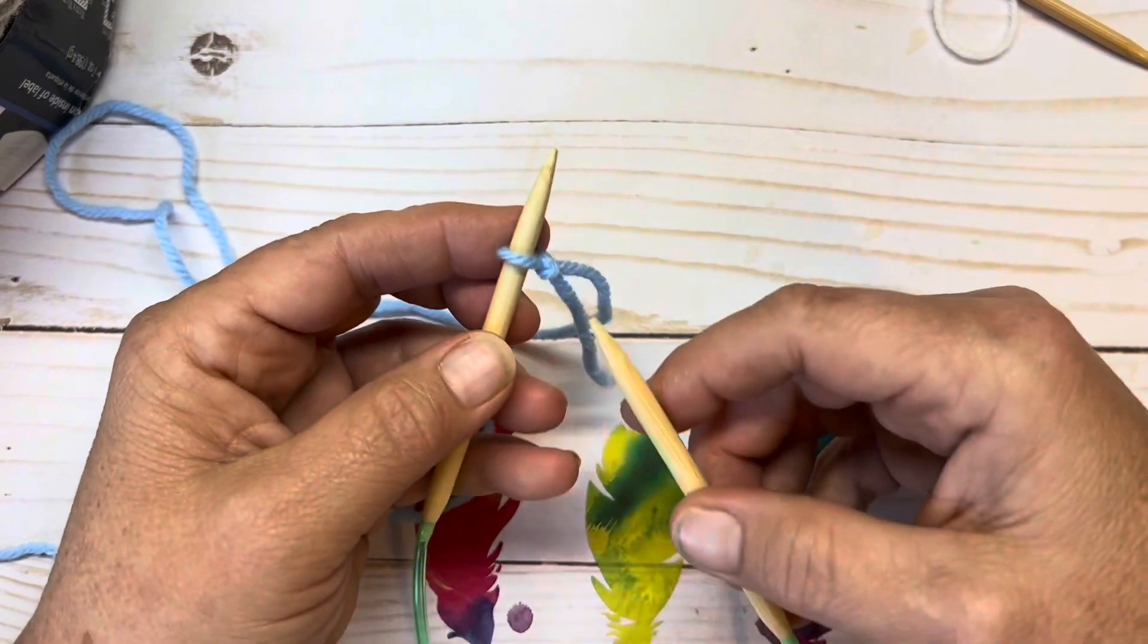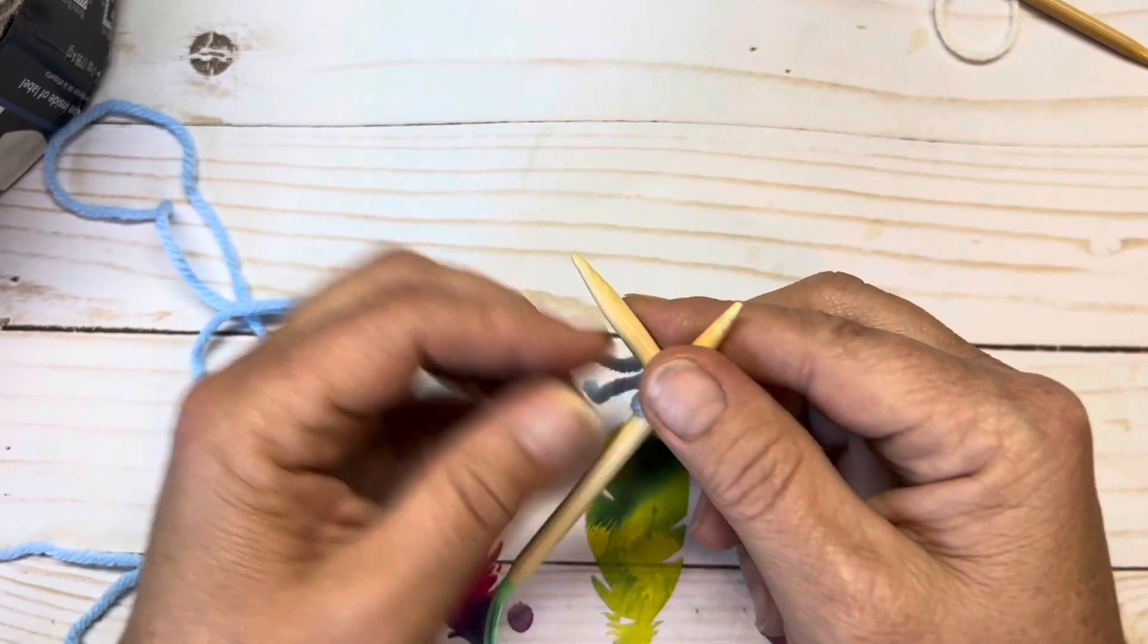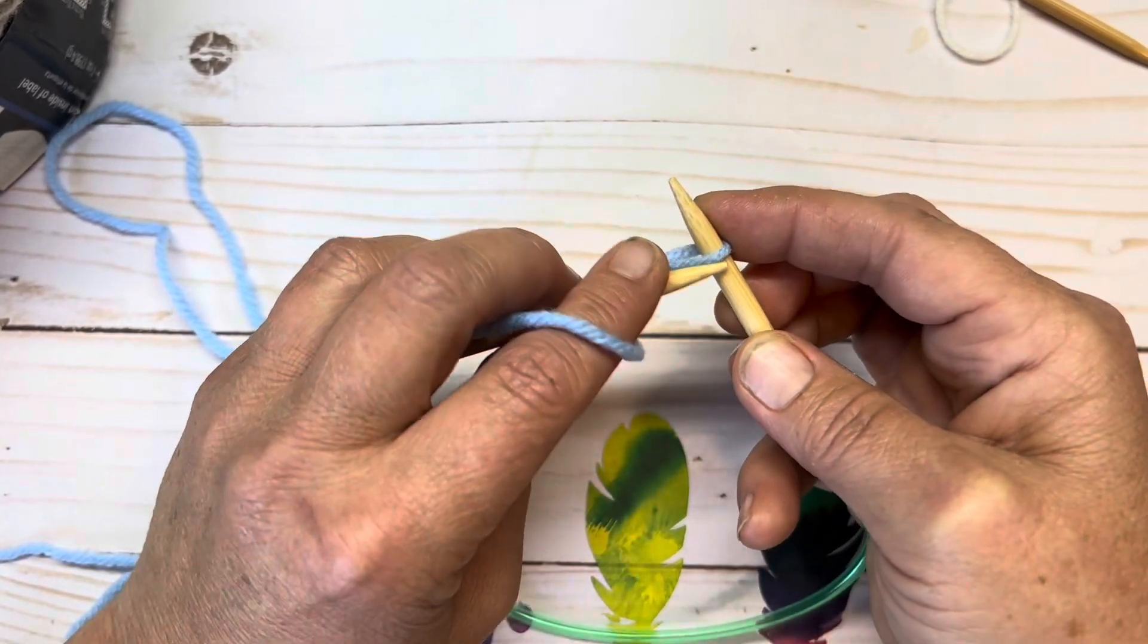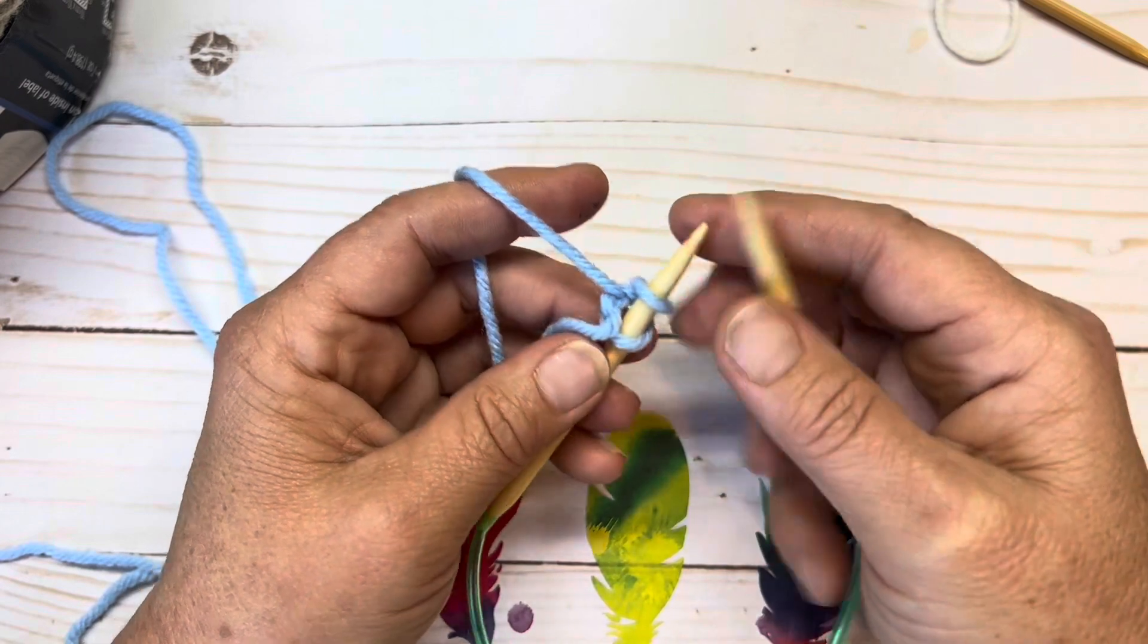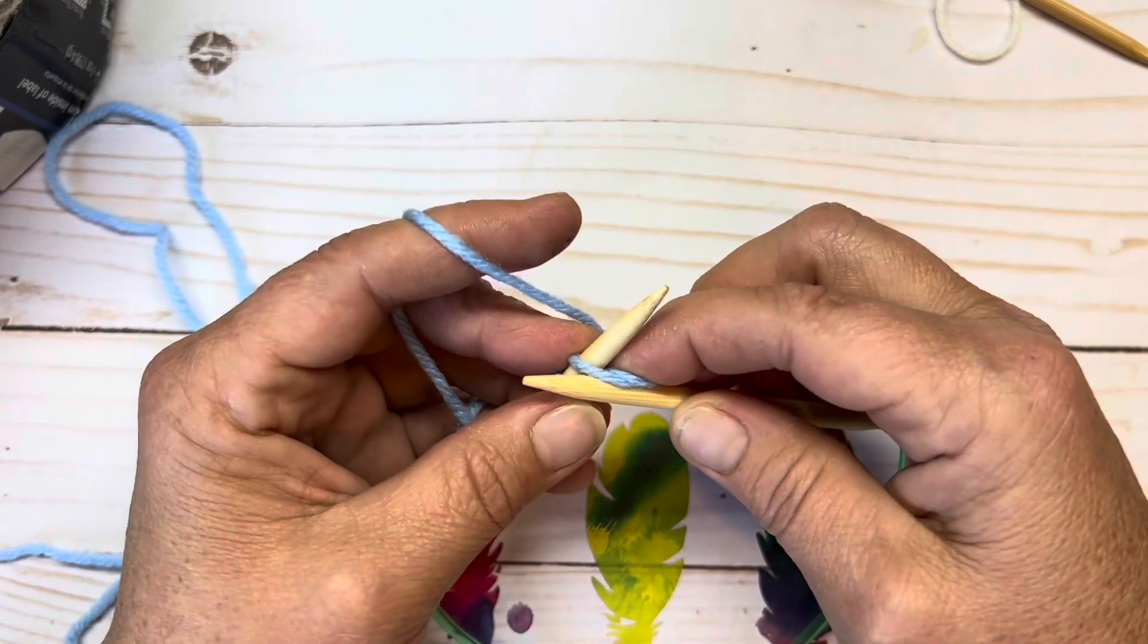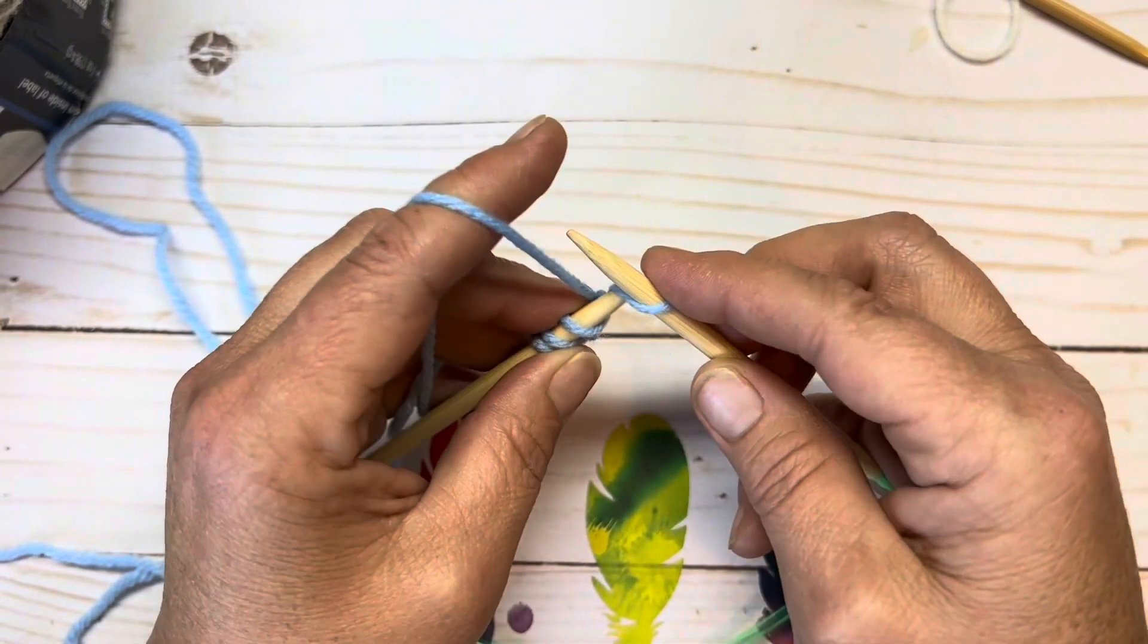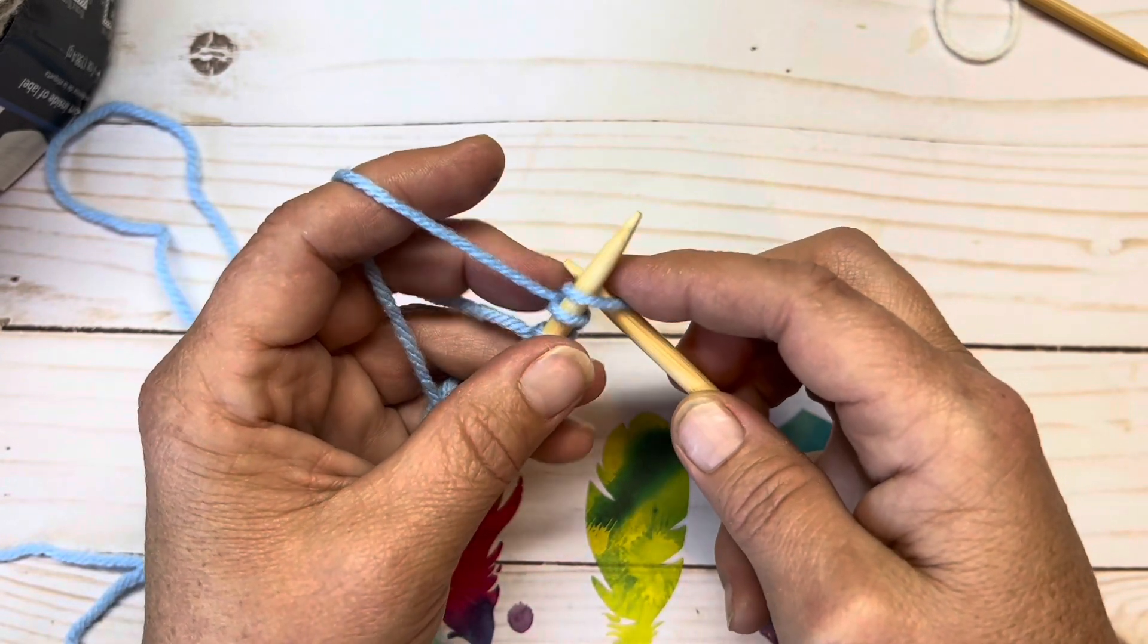So I have a slip knot on my needle and I'm going to insert as if to knit my right needle. I'm going to yarn over that needle and pull up a loop. Now I'm going to bring my left needle around and slip it over onto that left needle. That's two stitches. I'm going to do that again. So we're pulling up loops and placing those loops onto our needle.